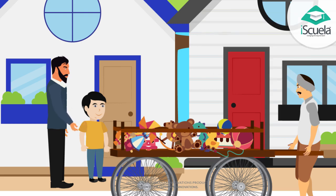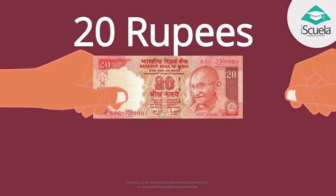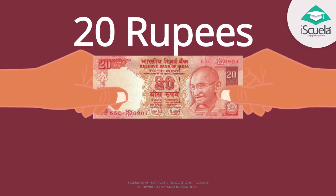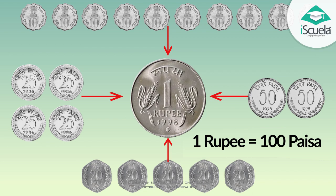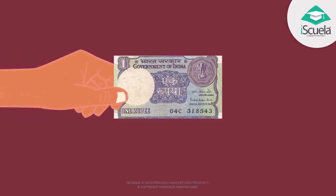Daddy, what is the value of this currency note? I will tell you about the currency notes and coins used in India. Look here, my child — what is the value of this note? Have a look at the note carefully and tell me what is written on it. It has the digit 1 written on it.